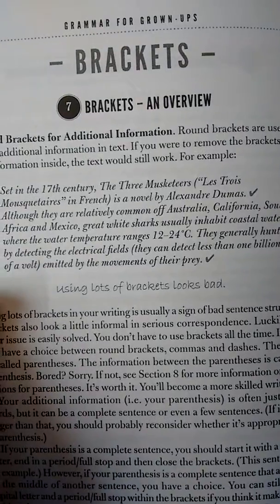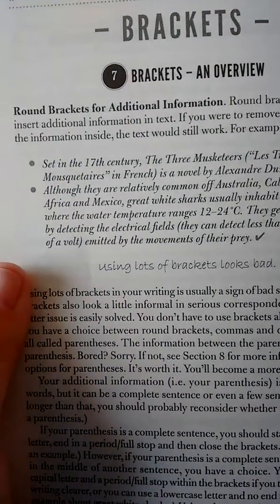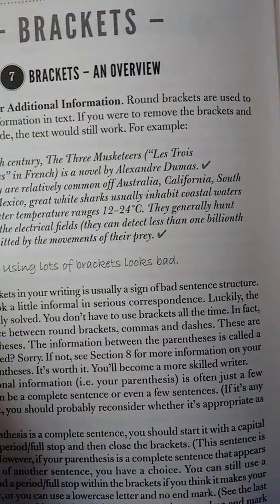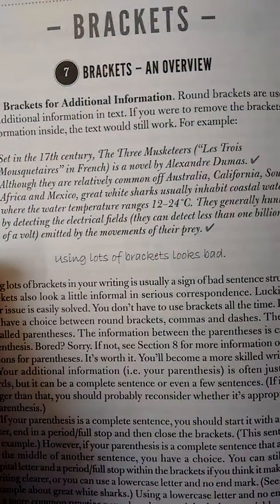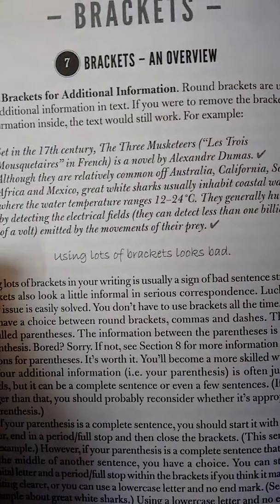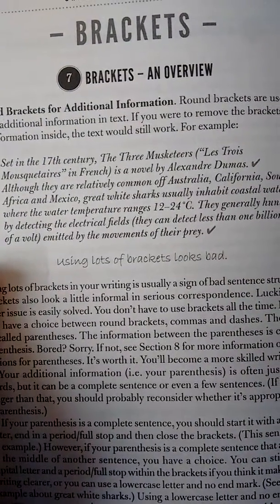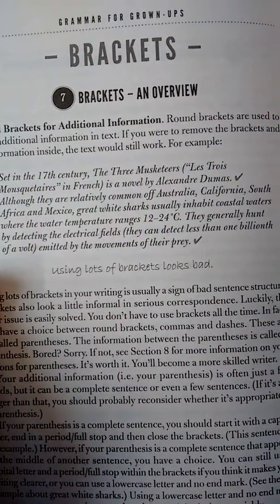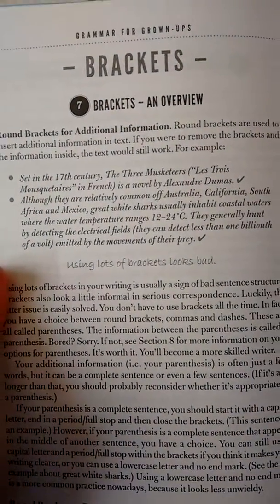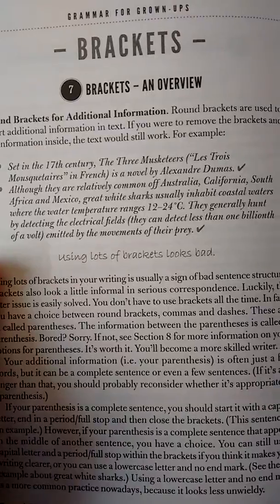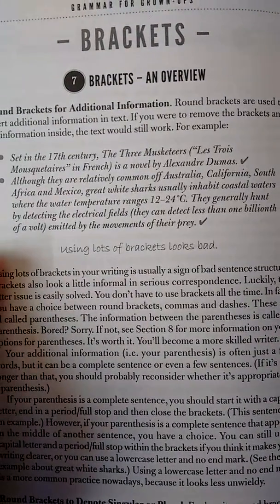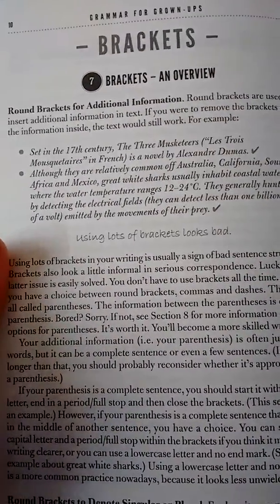It's a novel by Alexandre Dumas. Although they are relatively common off Australia, California, South Africa and Mexico, great white sharks usually inhabit coastal waters where the water temperature ranges 12 to 24 Celsius. They hunt by detecting electrical fields and can detect less than one billionth of a volt emitted by the movements of their prey.